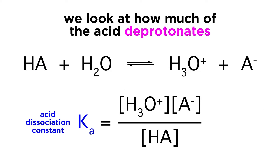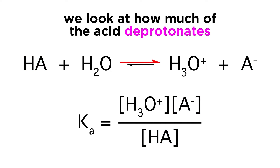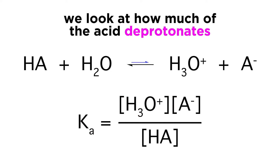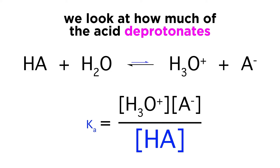This equilibrium is described with the acid dissociation constant, Ka. Ka will be equal to the hydronium ion concentration times the concentration of the conjugate base, divided by the concentration of the acid. If all of the acid deprotonates, the numerator is very big and Ka is very big. If very little of the acid deprotonates, the denominator is very big and Ka is very small.